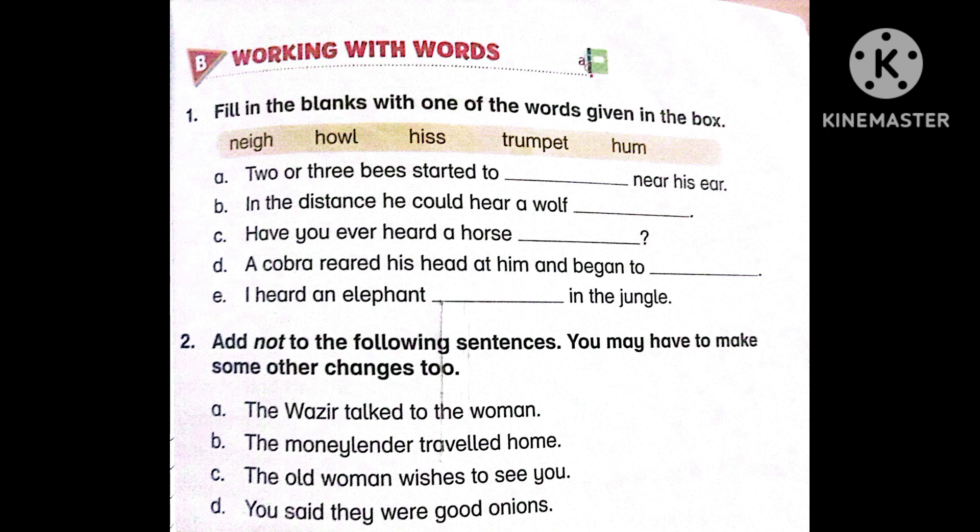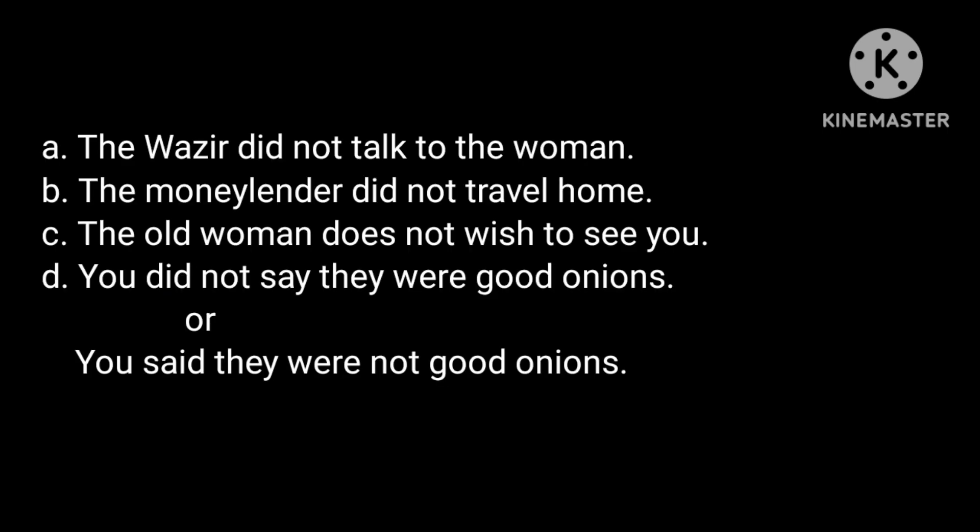The negative forms are: A. The wazir did not talk to the woman. B. The moneylender did not travel home. C. The old woman does not wish to see you. D. You did not say they were good onions. Alternatively for D: You said they were not good onions. In sentences using the second form of the verb, we applied 'did not'. In the third sentence, since it uses present tense with 'wishes' (with S), we use 'does not'. The last sentence also uses 'did not'.